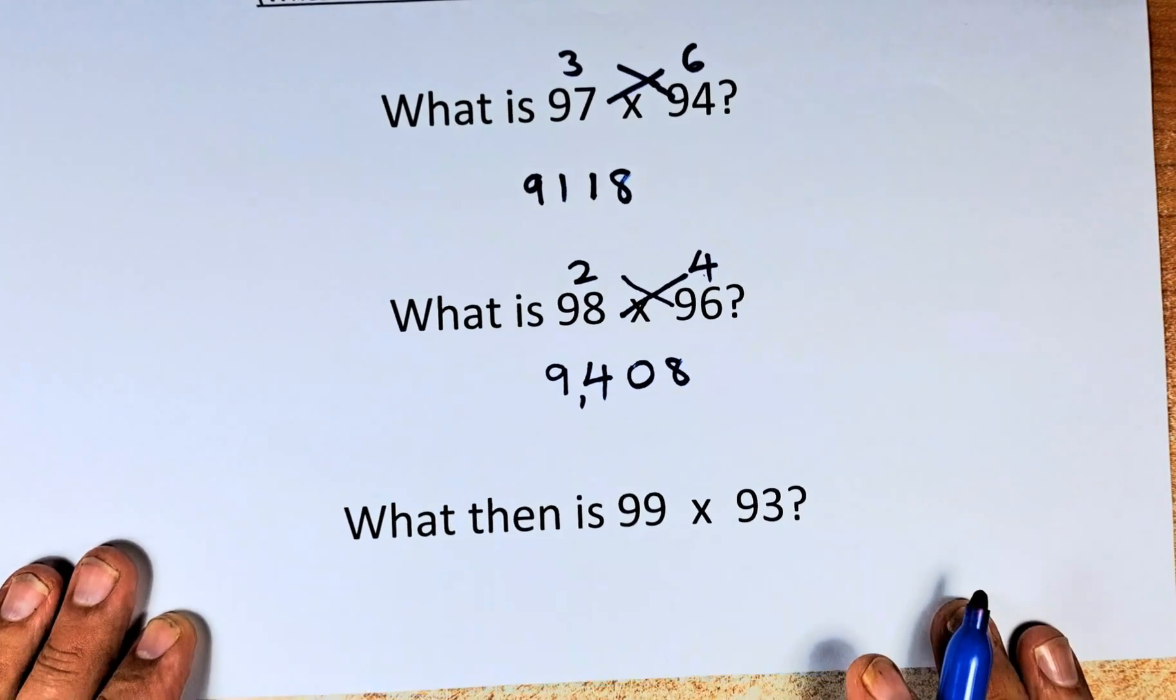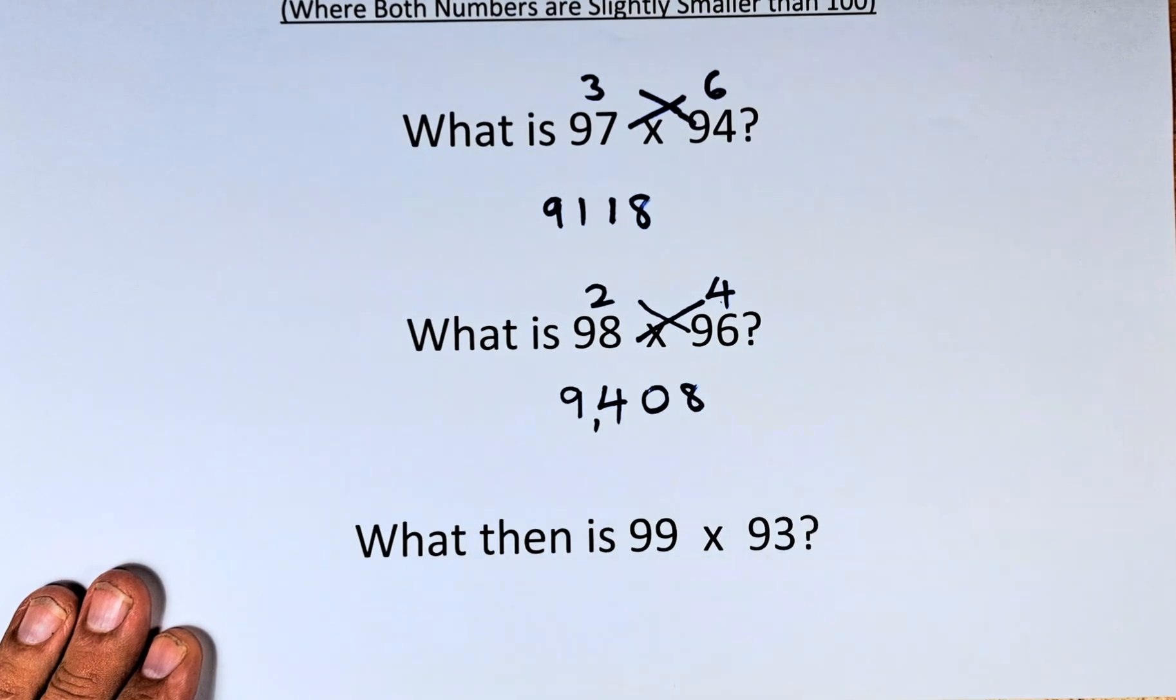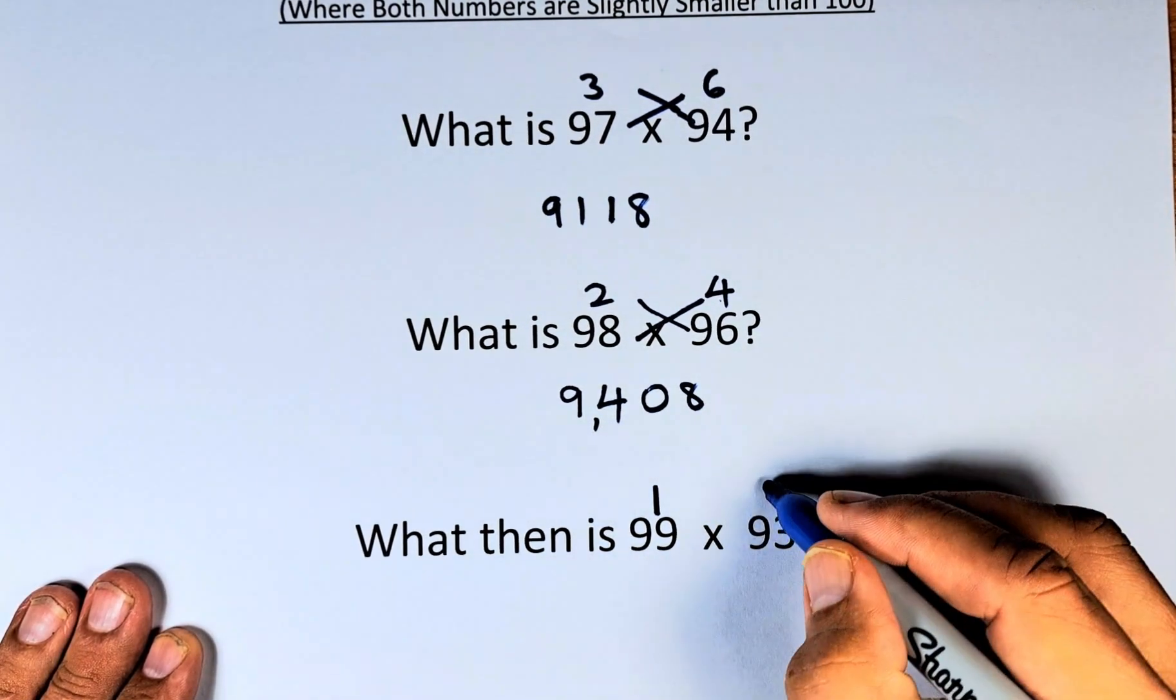And last but not least, we're going to move up now. What is 99 times 93? To get to 100 from 99, we add 1. To get 100 from 93, we add 7.